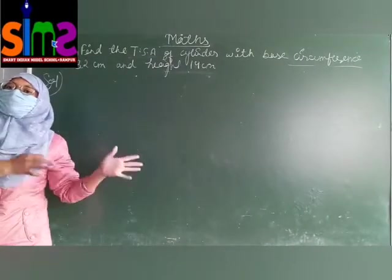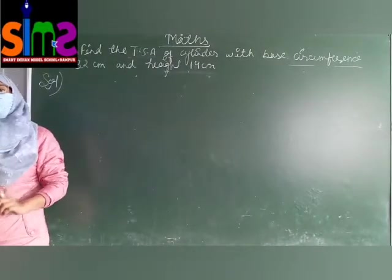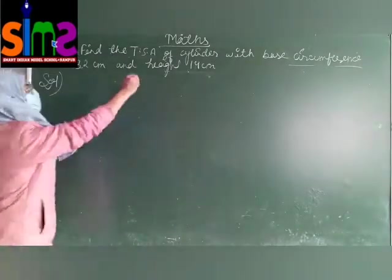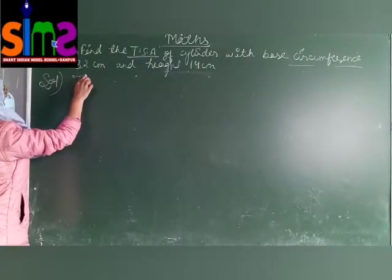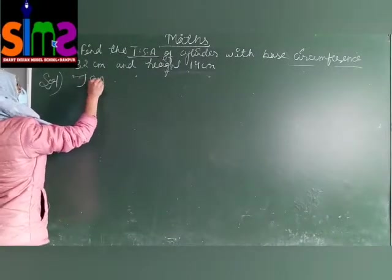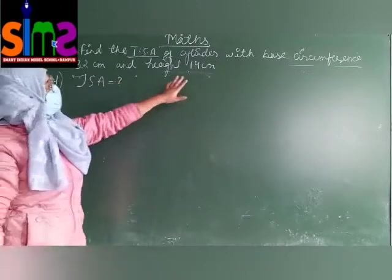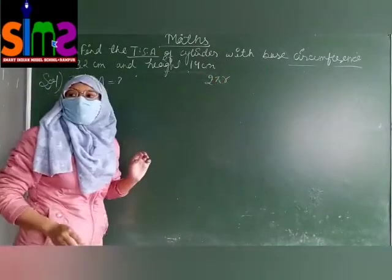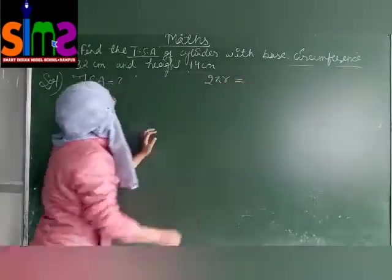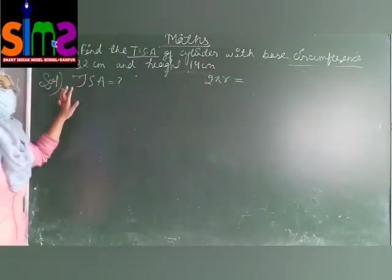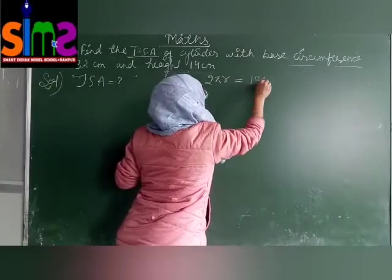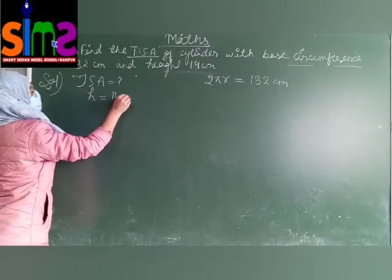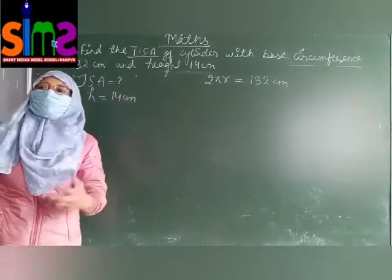The question is quite same as we discussed in question number 1. Question number 1 was asking about CSA and question number 2 is asking about TSA. So we need to find out TSA. And what is given? First of all, what will we do here?